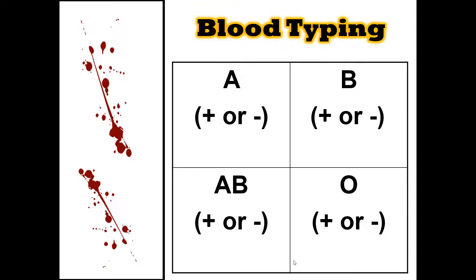To recap blood typing: there are four different blood types — actually eight if we're talking about the rhesus factor, or Rh factor. So you can have A, B, AB, or O. If we factor in the positive and negative, you can have A positive, A negative, B positive, B negative, AB positive, AB negative, O positive, or O negative — eight different blood types.